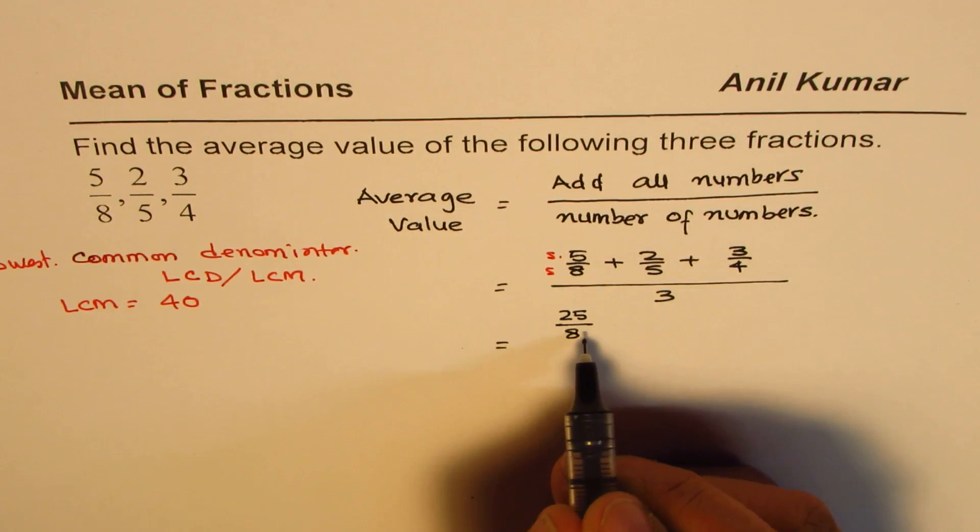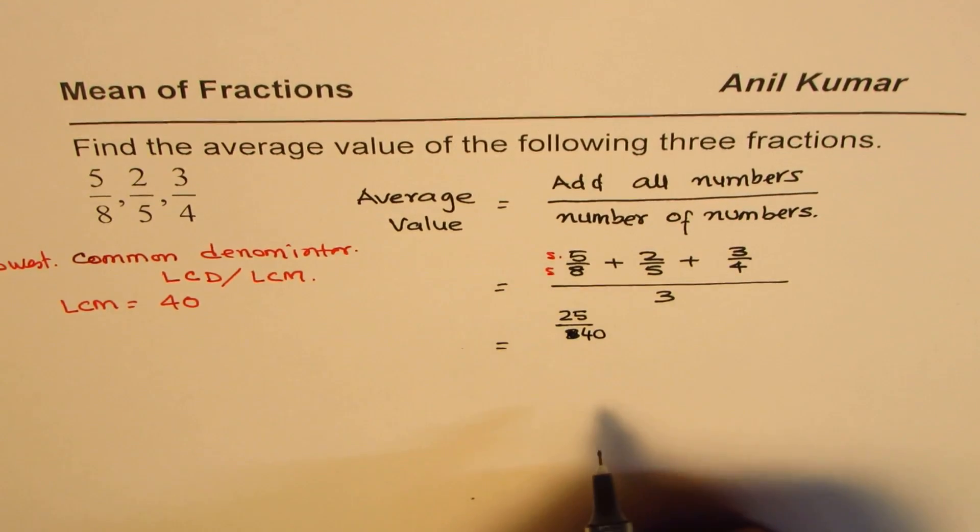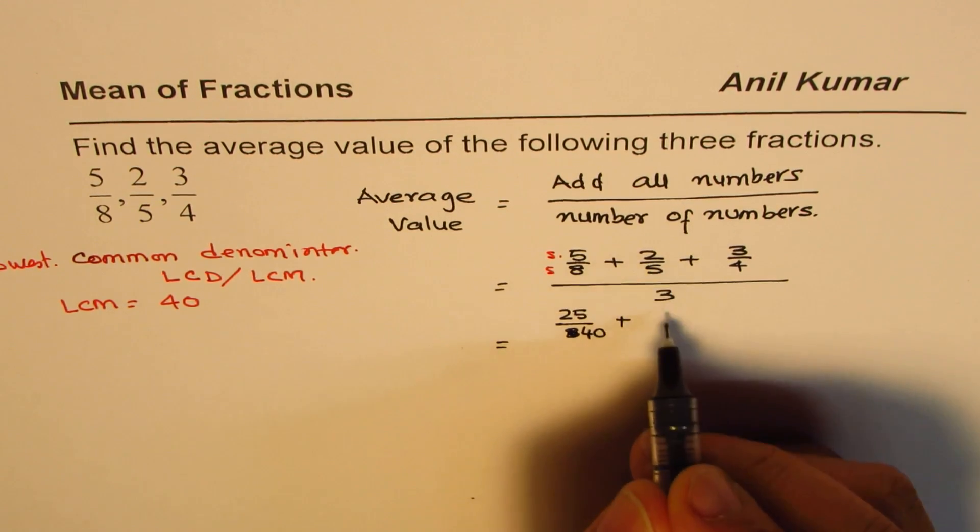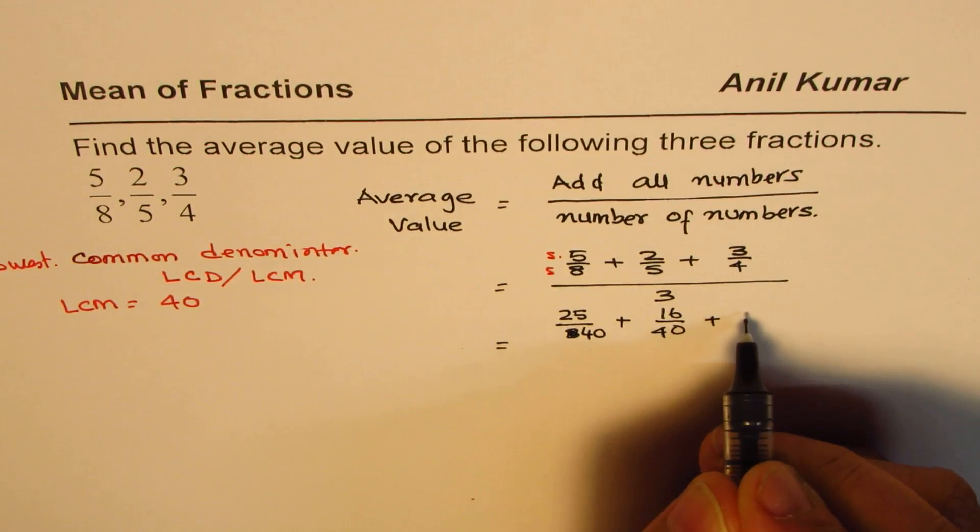How about this one? 2 over 5 times what equals 40? So we multiplied both by 5 to make it 40. We have to multiply both by 8, so we get 16 over 40. And in this case by 10, so we get 30 over 40.